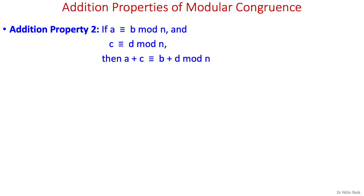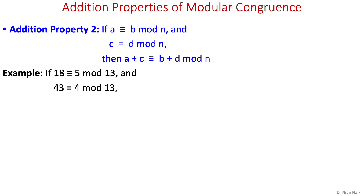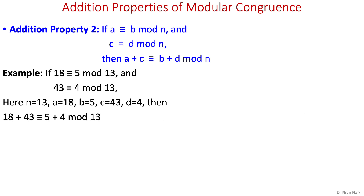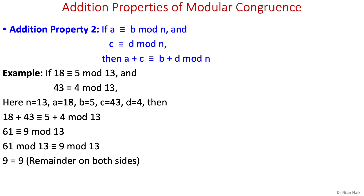Another addition property of modular congruence states that if we have two congruence relations with the same mod n — that is, a is congruent to b mod n and c is congruent to d mod n — then a plus c is congruent to b plus d mod n, and that is true. Let's check it with an example: if 18 is congruent to 5 mod 13 and 43 is congruent to 4 mod 13, we know the values of n, a, b, c, and d. Placing these values in the congruence relation and adding the numbers, we get the final relation and their mods are equal. So this addition property is true.